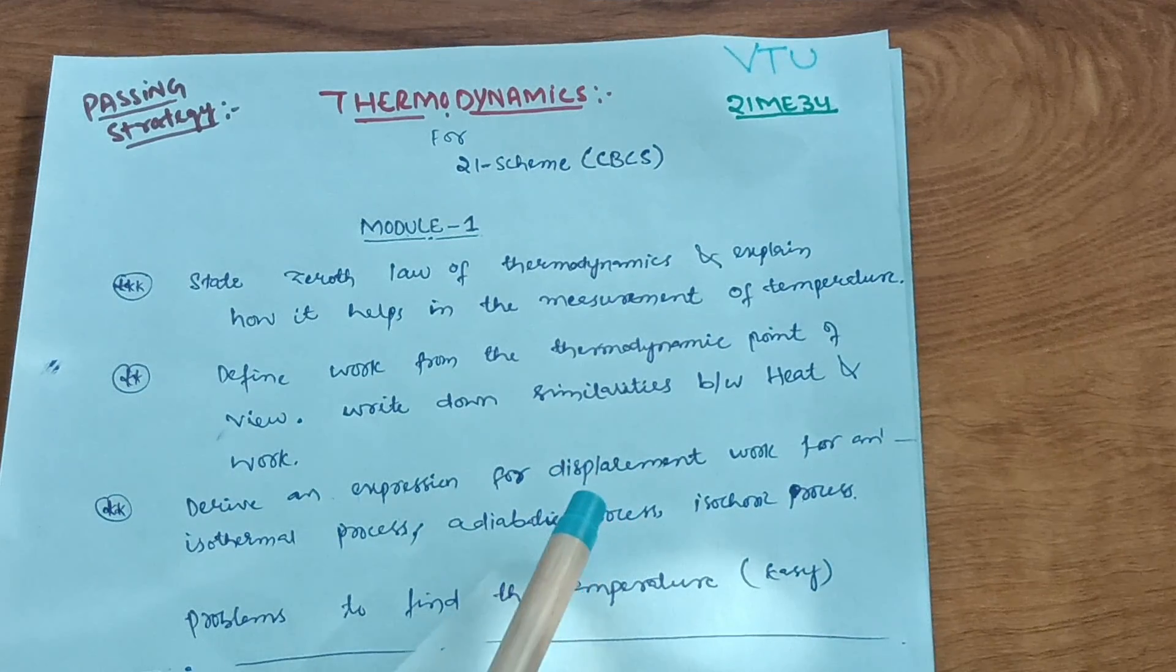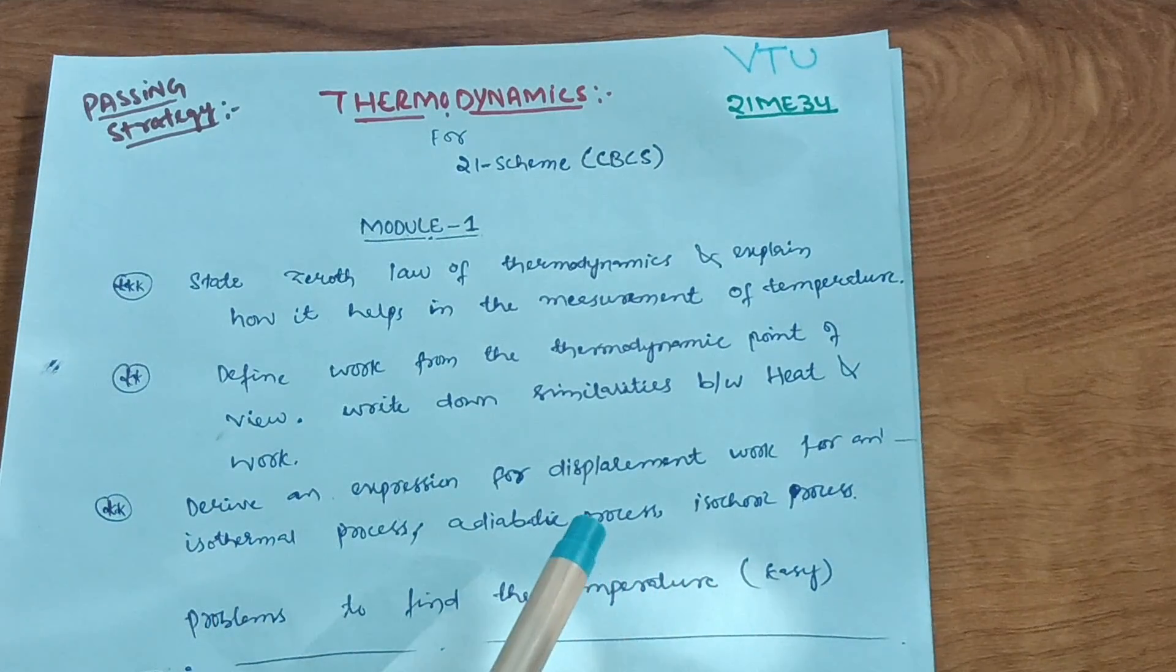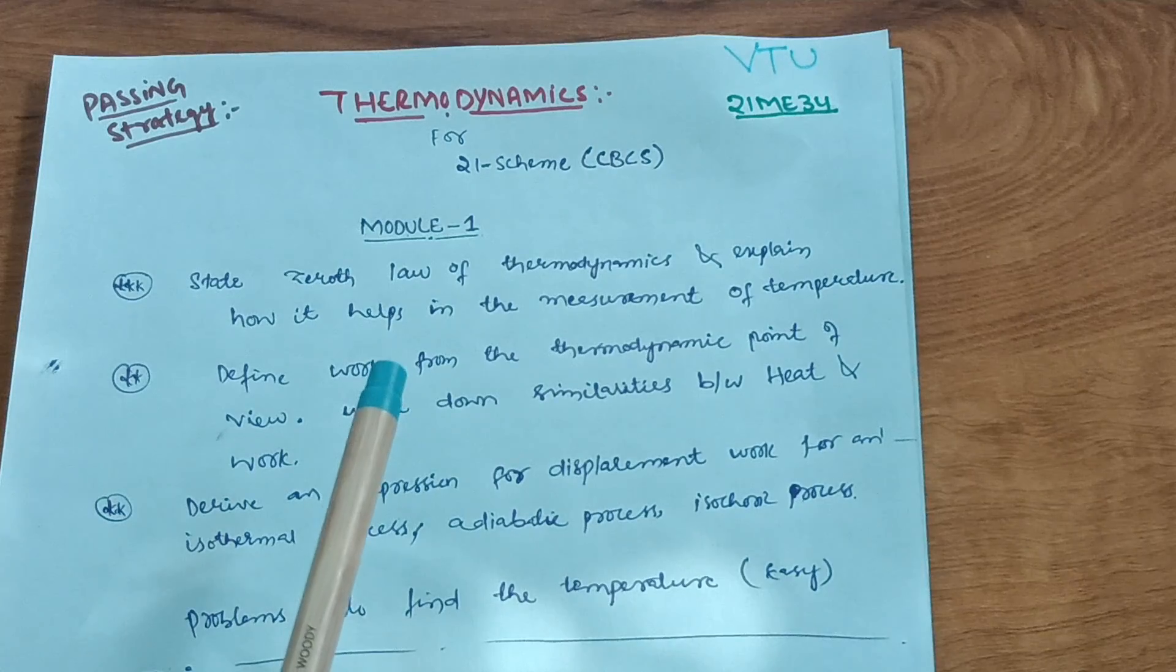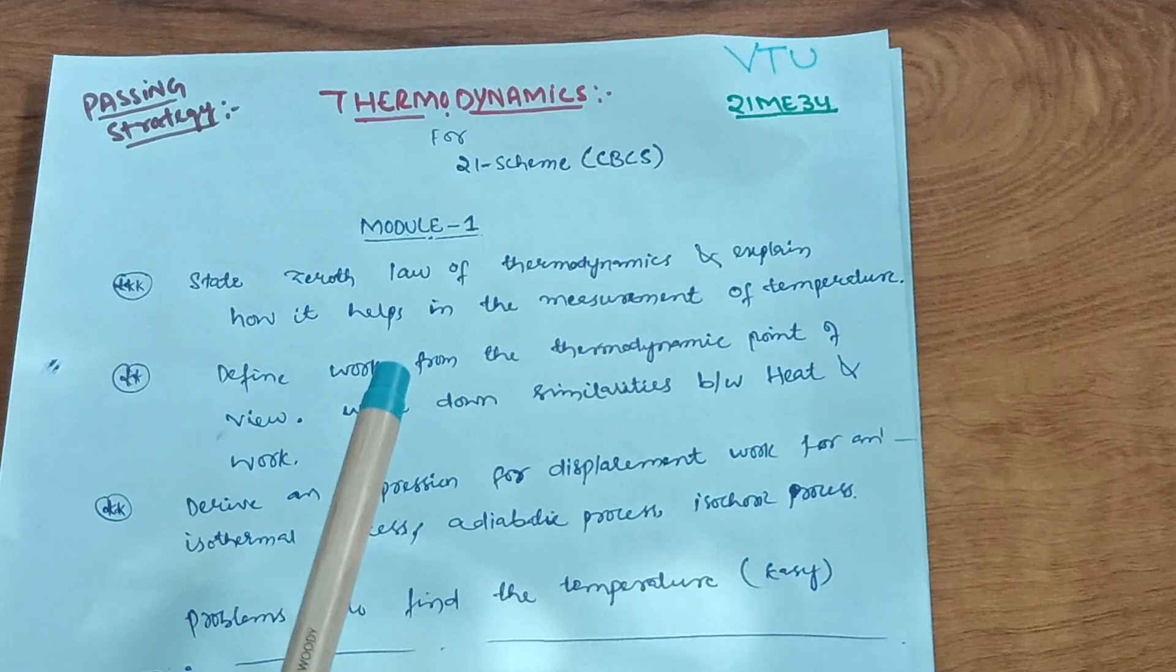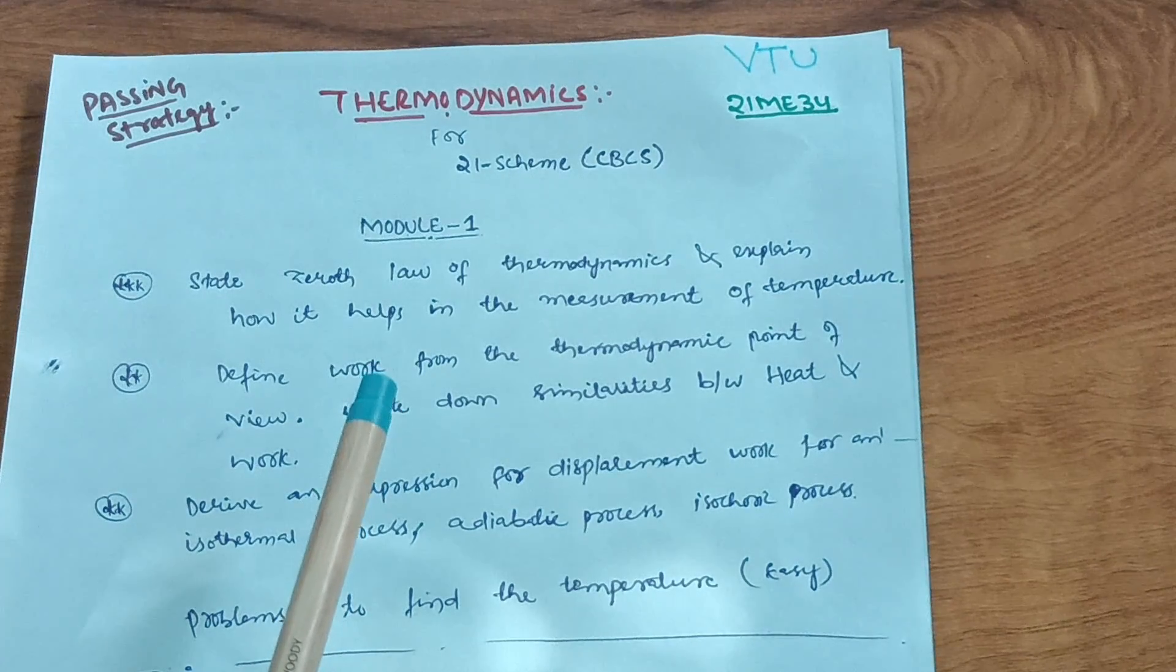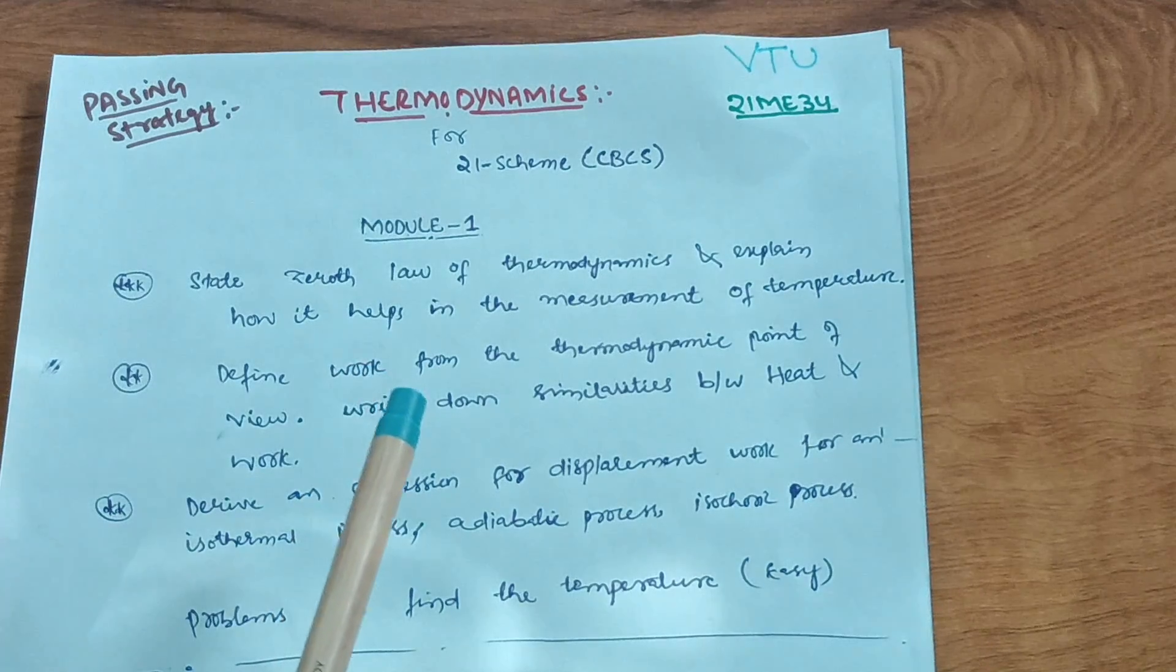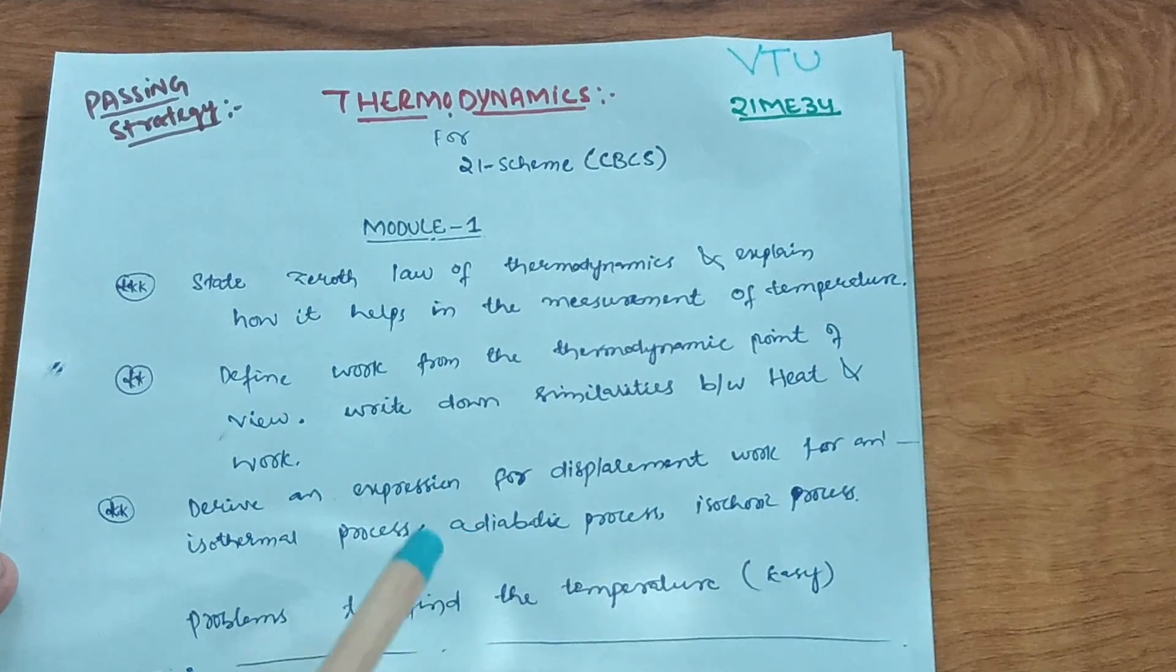You have to focus on these three processes and write down the expressions accordingly. Next are problems to find the temperature, which are easier problems. This is considered a passing module in thermodynamics, so don't leave anything from this module. Some definitions are there for self-study, like microscopic or macroscopic view, system, path, cycle, process.